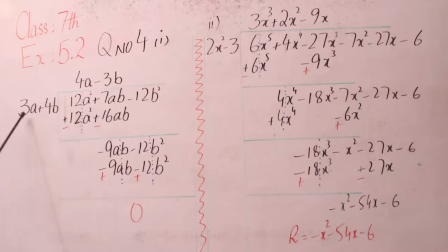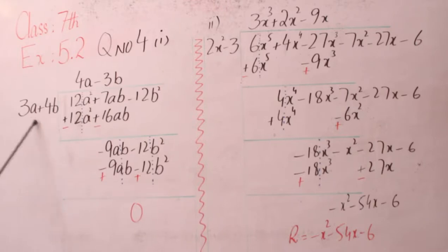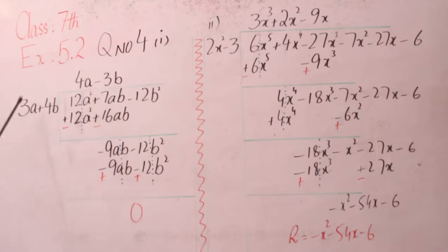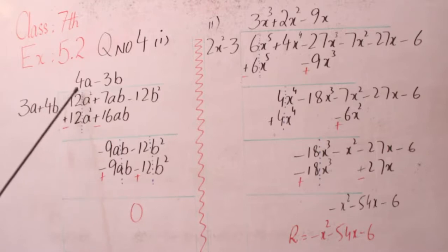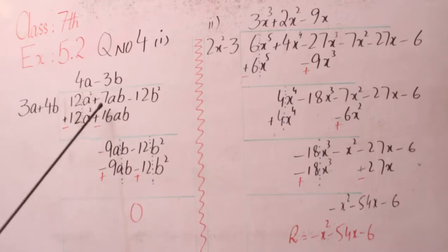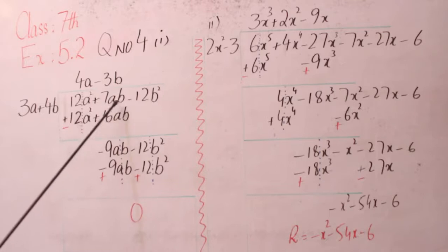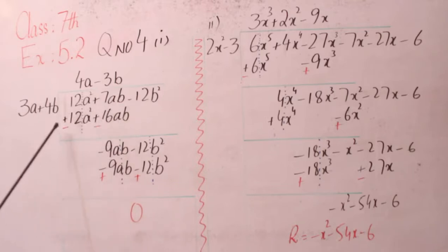پھر ہمیں 12 بنانا ہے تو 3 کو 4 سے multiply کیا تو 12 بن گیا۔ یہاں پر a² ہے اور یہاں پر a ہے تو a یہاں پر لگا دیں گے یعنی کہ 4a کو multiply کریں گے 3a کے ساتھ، ہمارے پاس 4×3=12، a×a=a² بن جائے گا۔ Same value سے multiply ہونی ہے: 4×4=16ab، تو یہاں پر 16ab نیچے لکھ دیں گے۔